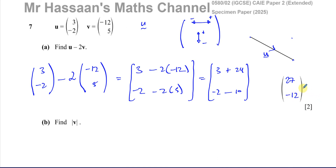So you end up with 3 + 24 = 27, and -2 - 10 = -12. The answer to part (a) is (27, -12). Simple vector arithmetic — just be very careful about your signs. I like to write the whole thing out: 3 minus 2 times (-12), and -2 minus 2 times 5, then add the components together.